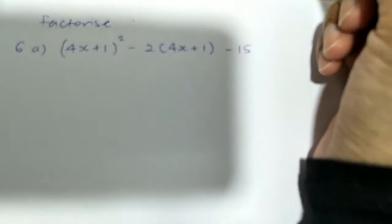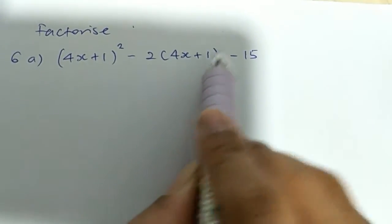Next question, you're supposed to factorize the following algebraic expression. So you have 4x plus 1 here, 4x plus 1.